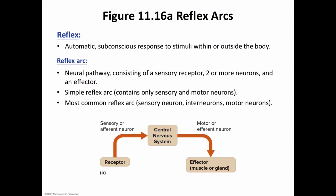Two or more neurons involved in such communication constitute a nerve pathway. The simplest nerve pathway begins with a sensory receptor and ends with an effector, including as few as two neurons. Such a nerve pathway is called a reflex.